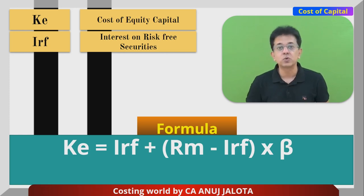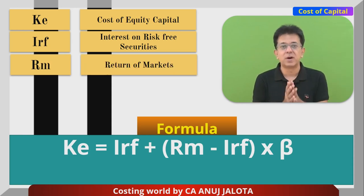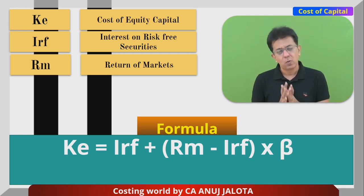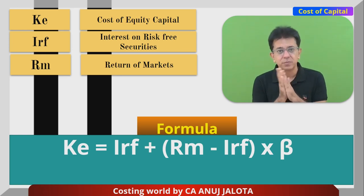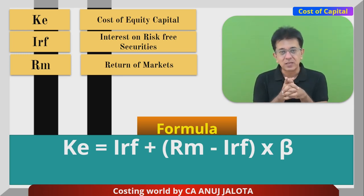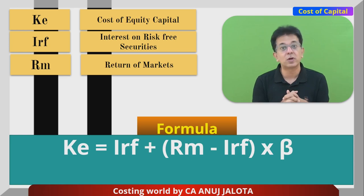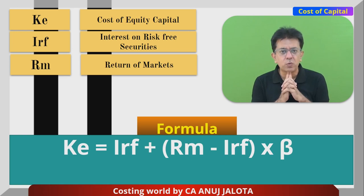Rm is the return of the markets — how much return the markets are expected to give. You could have gotten 10% anywhere risk-free, but suppose markets on average give 15%. You expect 15% from the markets. So your Ke formula takes the shape: 10 + (Rm − Irf). You went to the stock exchange because you wanted something extra — that extra is called market premium, which is Rm − Irf = 15 − 10 = 5%.